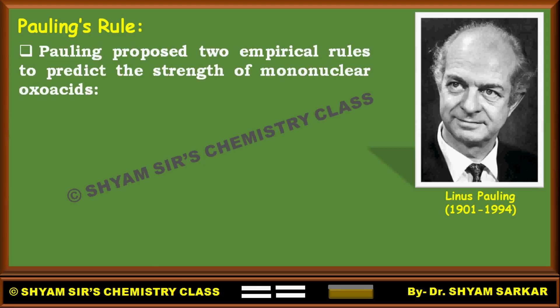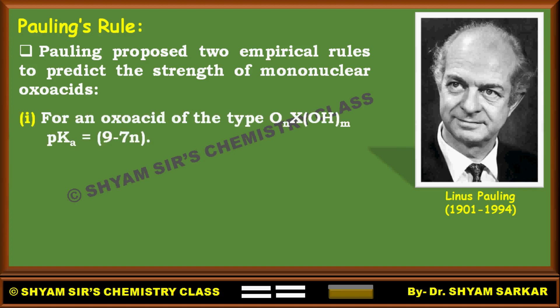So what is Pauling's rule? He proposed two empirical formulas or rules to predict the strength of mononuclear oxoacids. Rule one: for an oxoacid of the type O_N X(OH)_M, pKa will be equal to 9 minus 7N.